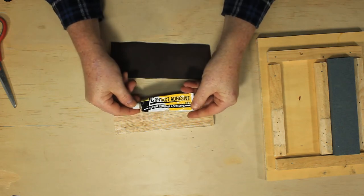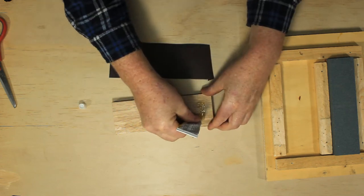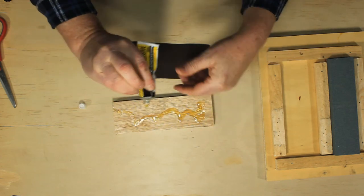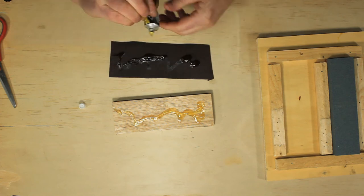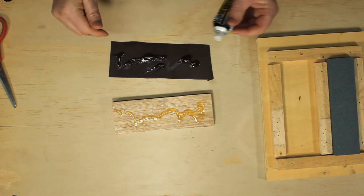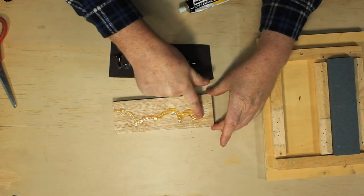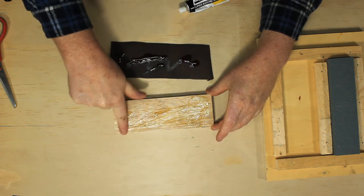I'm just going to use some simple contact adhesive. Put the contact adhesive on both the leather and the wood. Make sure you spread it with your finger so that your finger gets all sticky and you're going to spend a few days picking all the glue off it.